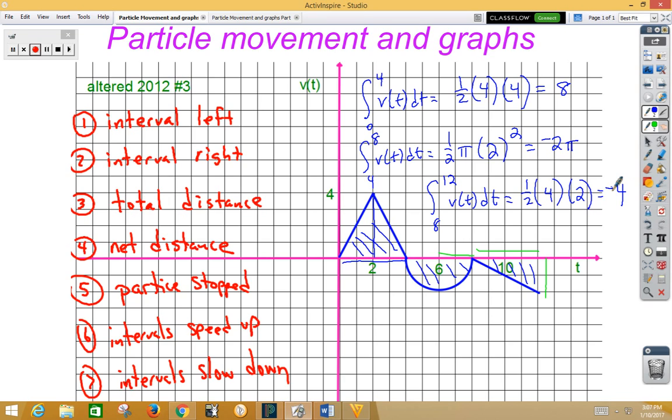Total distance is the absolute value of all of those values. We're going to need to add 8 plus 4 plus 2 pi or 12 plus 2 pi as our total distance. Our net distance, we're going to leave the values alone. We have 8 and a negative 4 and a negative 2 pi, which would give us 4 minus 2 pi.